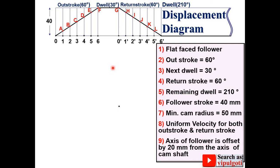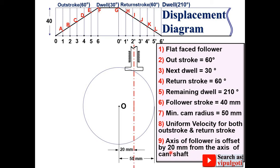Now start the cam profile. First take any point randomly and give the name as O. The minimum cam radius is given to you as 50 mm, so draw the circle with 50 mm radius, that is called the base circle. Next offset distance is given to you as 20 mm, so draw offset circle with center O and radius equal to 20 mm.